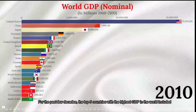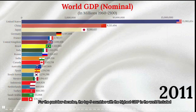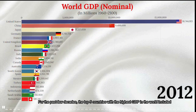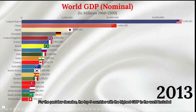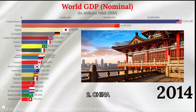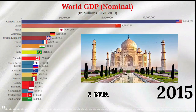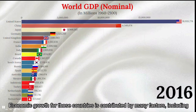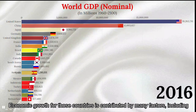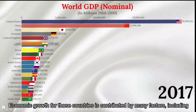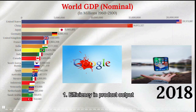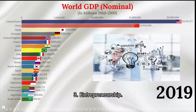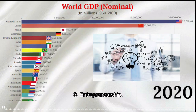For the past few decades, the top five countries with the highest GDP in the world included the United States, China, Japan, Germany, and India. Economic growth for those countries is contributed by many factors including efficiency in product output, natural resources, and entrepreneurship.